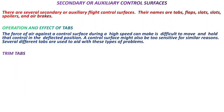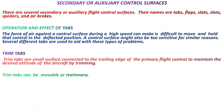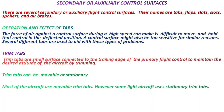The first one is trim tabs. Trim tabs are a small surface connected to the trailing edge of the primary flight control to maintain the desired attitude of the aircraft by trimming. Trim tabs can be movable or stationary. Most aircraft use movable trim tabs; however, some light aircraft use stationary trim tabs.